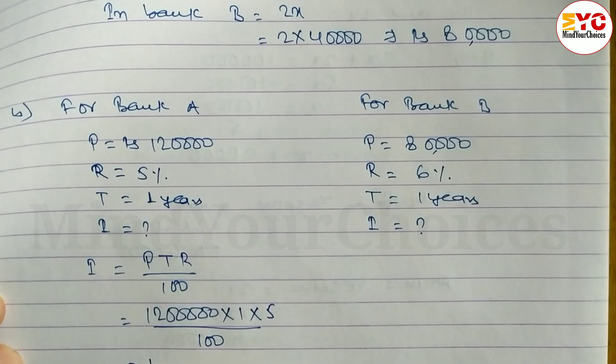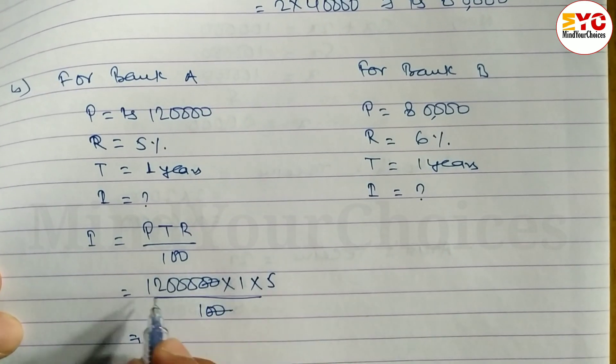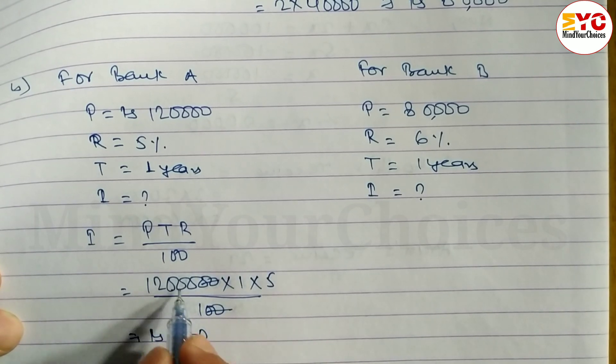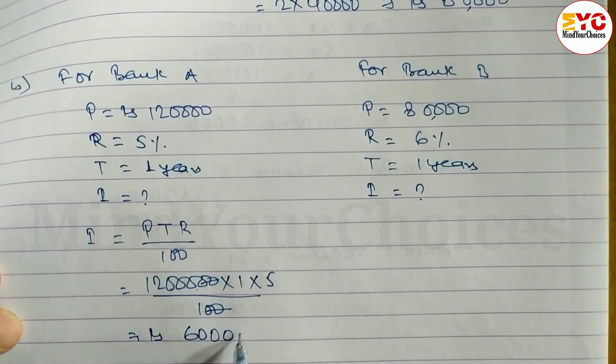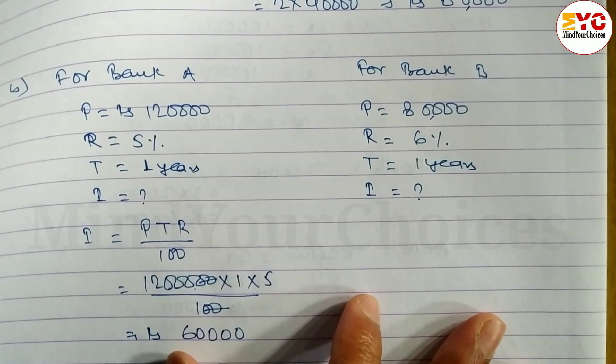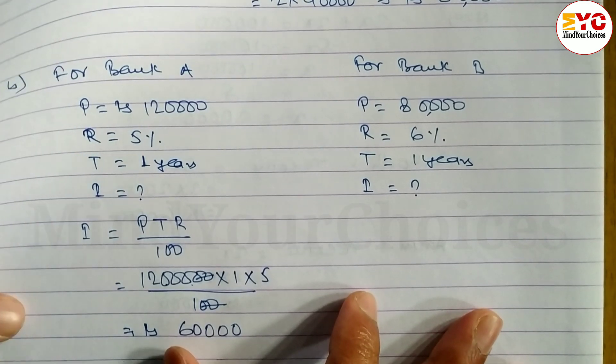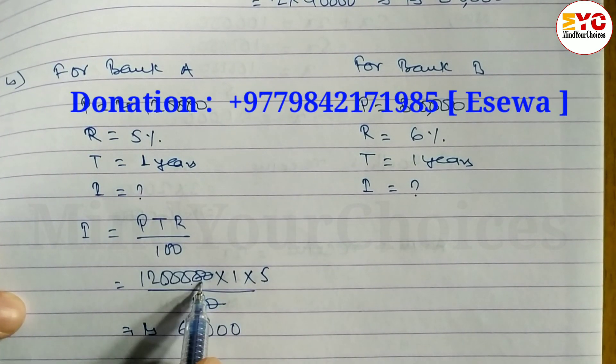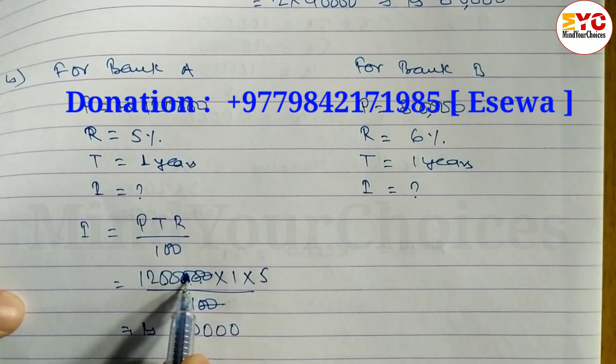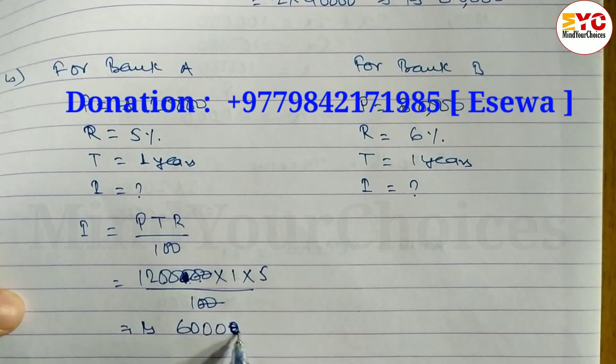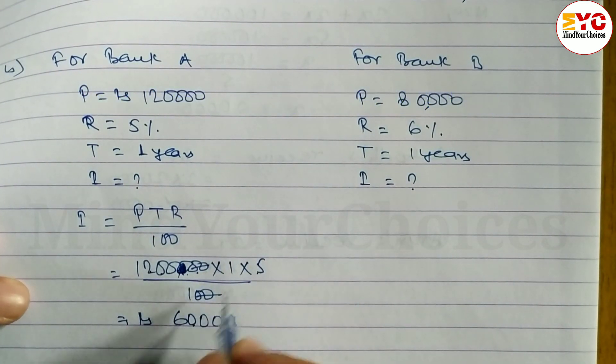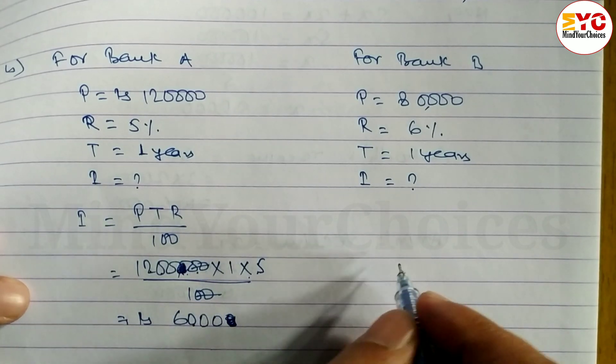Let's calculate and we get 20, 20 cancel, 5 becomes 10, 5 becomes 5, so here we get 6,000. Once again let's calculate: 20, 20 cancel, 5 becomes 10, remaining 5 becomes 5. We get 6,000. Bank A gives interest of 6,000.